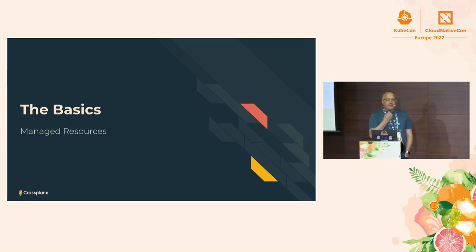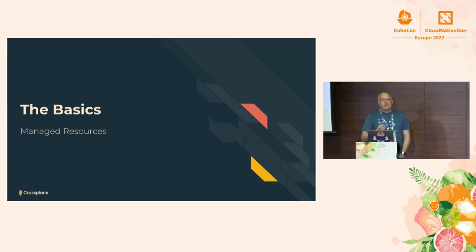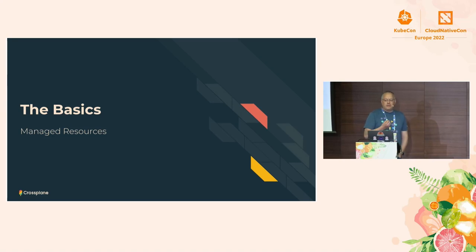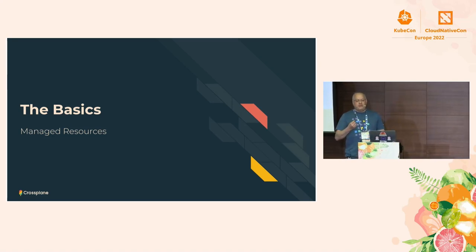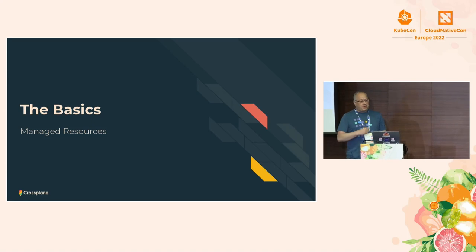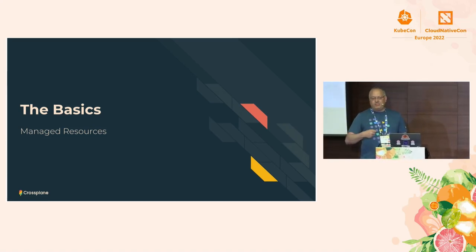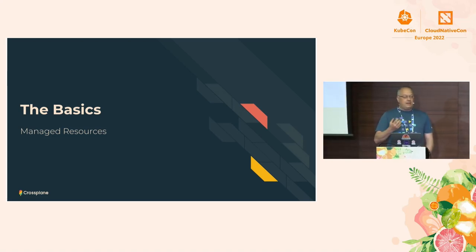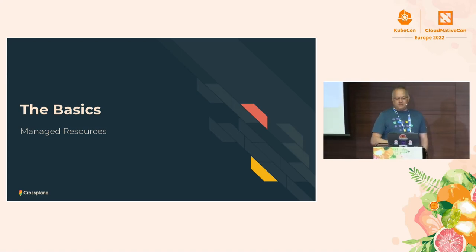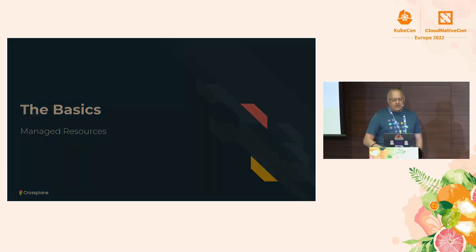We're going to talk about probably the fundamental concept of Crossplane. If you understand this, it's really going to help you understand pretty much everything else about Crossplane, and this is called a managed resource. A managed resource is a Kubernetes representation of something external to the cluster. It could be anything — in our demos today we're going to talk about cloud resources, but people have also been talking about managing things like ships and trucks. Basically, anything with an API could be managed by Crossplane.